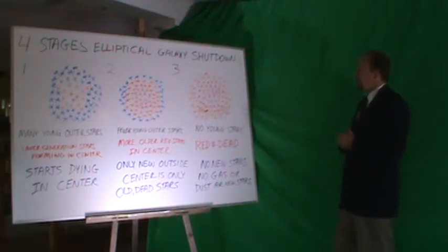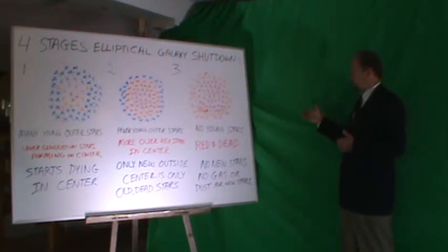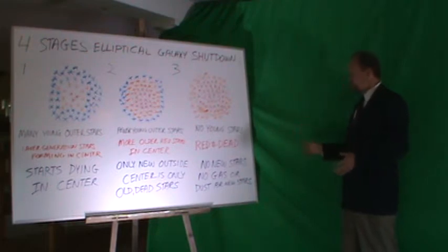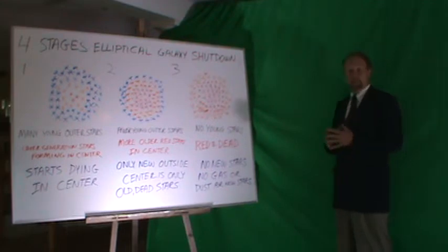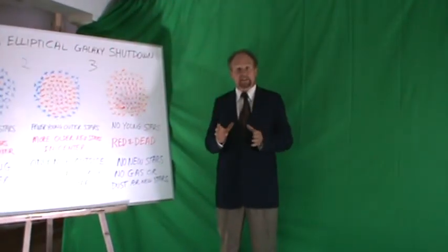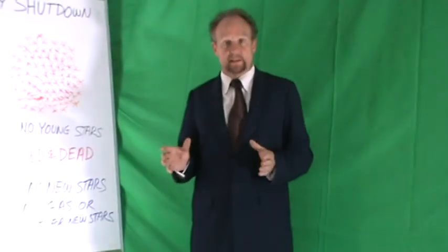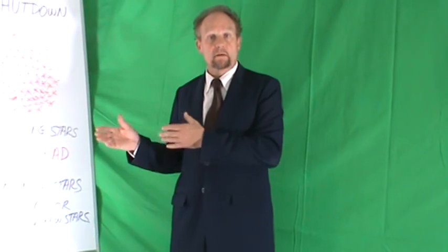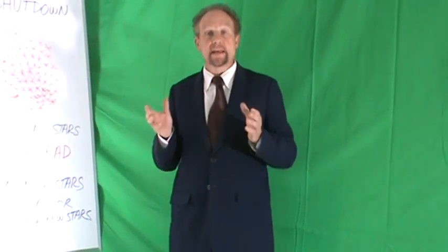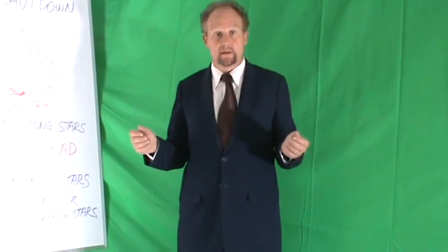In stage three, as this galaxy dies, we see no young stars at all — this galaxy is now red and dead, with no new stars because there's no gas or dust. So the key point is that where the galaxy shuts down is where the source of gas is: in the center, as my white hole theory claims, and not an external gas supply as the Big Bang Theory claims.